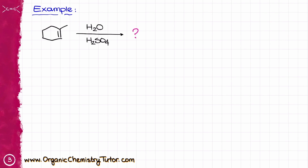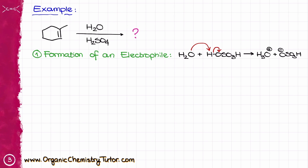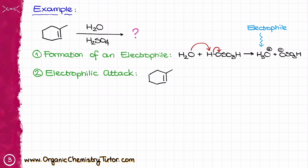To continue with the mechanism, let's look at a real example. Say I have this reaction in front of me and I want to predict the product. Step number one is the formation of the electrophile — water reacts with whatever acid we have as a catalyst forming H3O+. Then, once I have my electrophile, I proceed with step two, the actual electrophilic attack. In this case, I take my alkene, which is 1-methylcyclohexene, and react that with H3O+, showing all electrons and bonds and their appropriate movements.